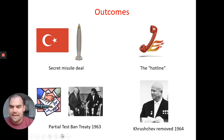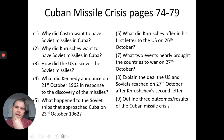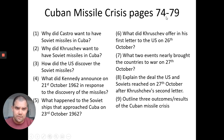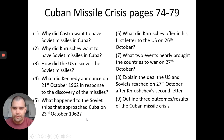Okay guys, you've got a few more questions. Questions one to five are from pages 74 to 75, six to eight from pages 77 to 78, and the last question about the outcomes and results of the crisis is on page 79. Answer those in full sentences in your books, and email me if you have any questions.